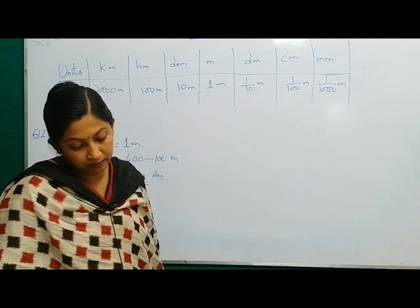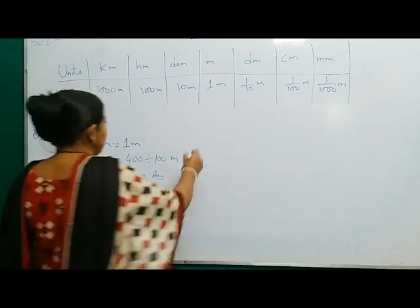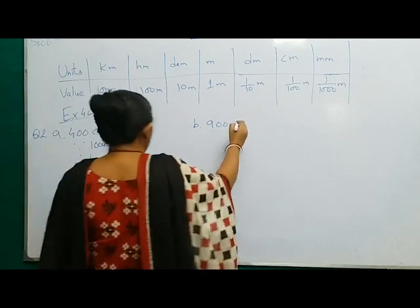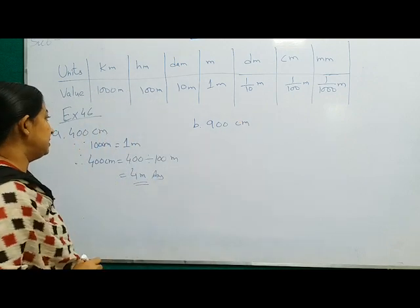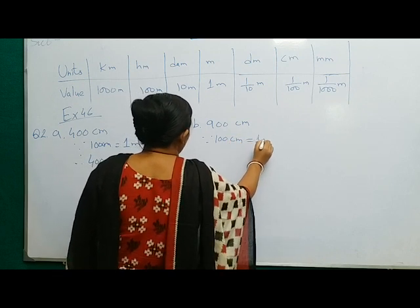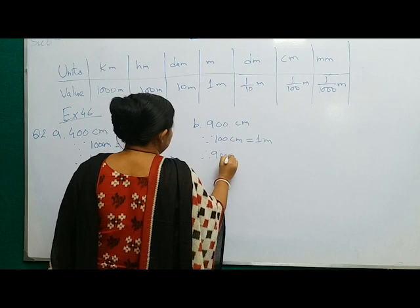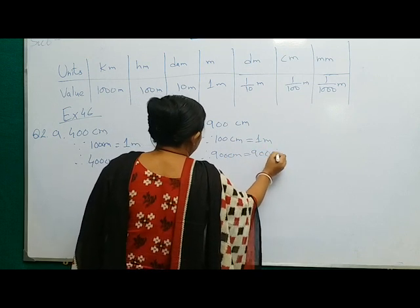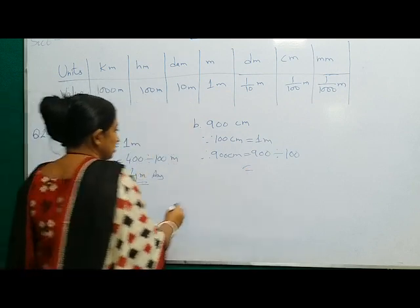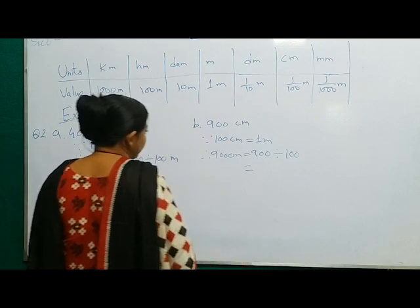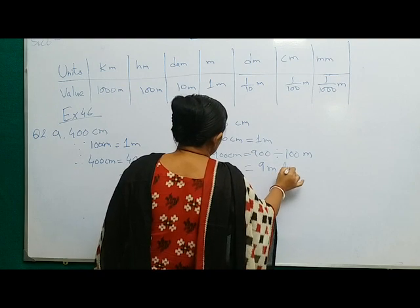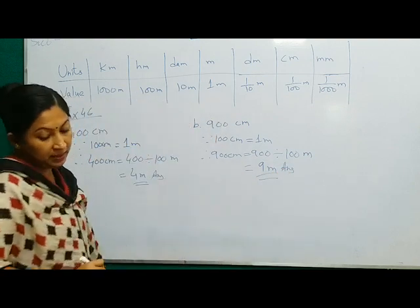Now let us do number B. It is given 900 centimeters. You will write the same way: since 100 centimeters is equal to 1 meter, therefore 900 centimeters is equal to 900 divided by 100. We are converting from lower to higher units, so it will be division. This will be 900 divided by 100, which gives 9 meters. This is the answer for number B, that is 9 meters.